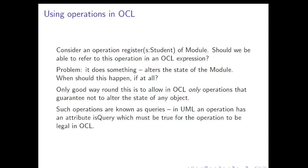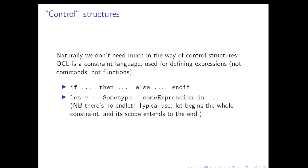So the only good way around this is to say that in OCL you can only refer to, use, operations that are guaranteed not to alter the state of any object. And those things are known as queries. In UML, an operation has an attribute isQuery. That is to say, the operation metaclass in UML has an attribute isQuery. And the value of that attribute must be true for the operation to be legally used in an OCL expression. If you're using a sophisticated OCL tool, then it will check. If you're using a less sophisticated OCL tool, then it may not, but it'll still be your job to make sure that that's the case. Just because you'll get nonsense if you start referring to operations that do have side effects inside your OCL expressions.